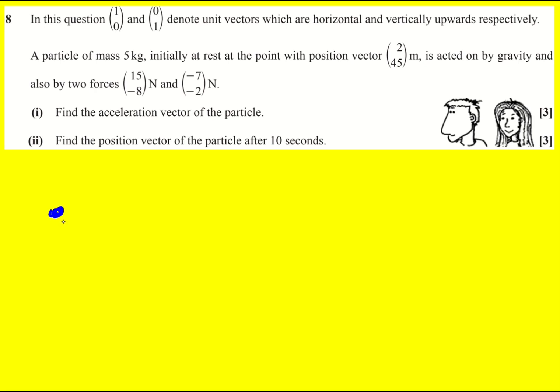We have a particle with mass 5 kilograms, so it's going to experience a weight of 5g. It's initially at rest with a position vector 2, 45. So maybe I could sort of move it along and say right here is my O and there's some sort of vector going in that direction, but that's not a force, that's a position vector.